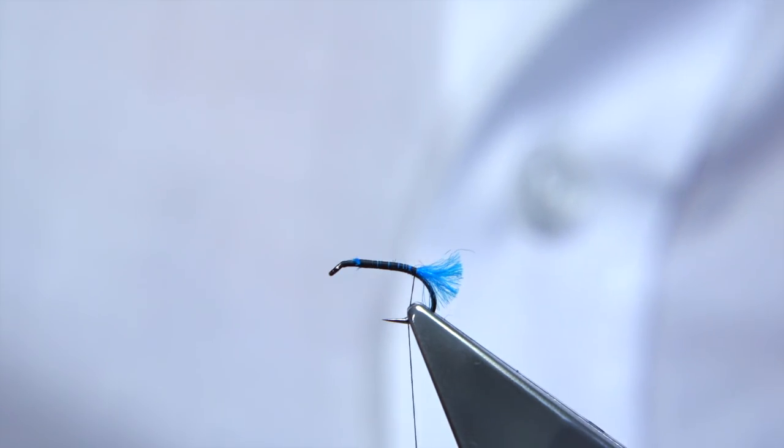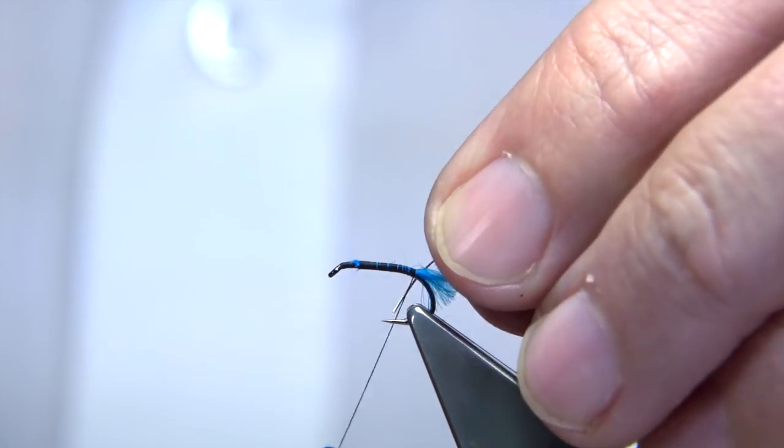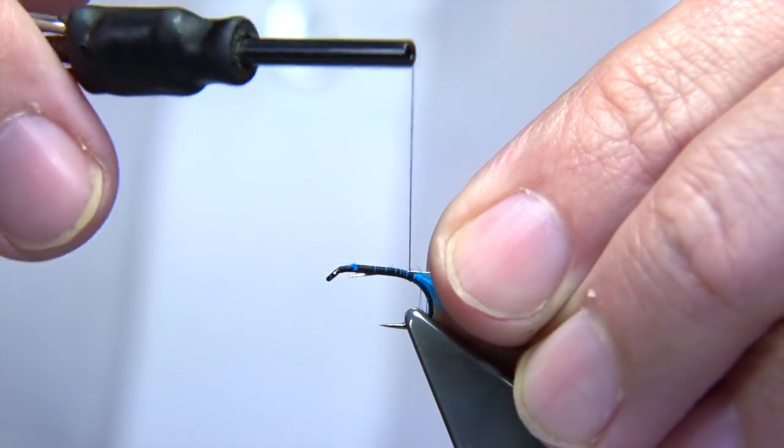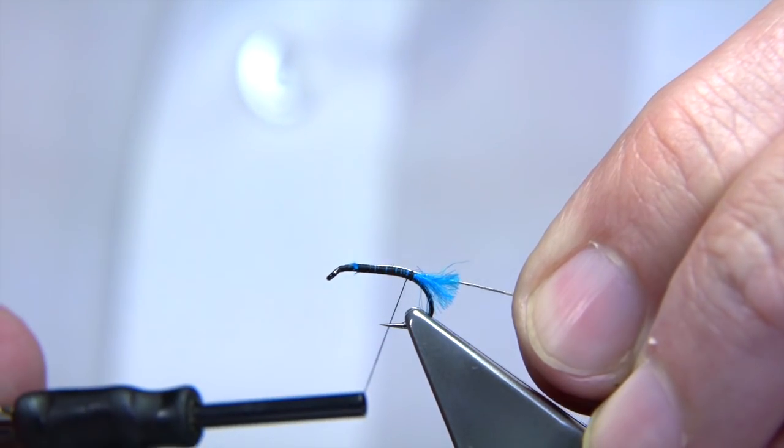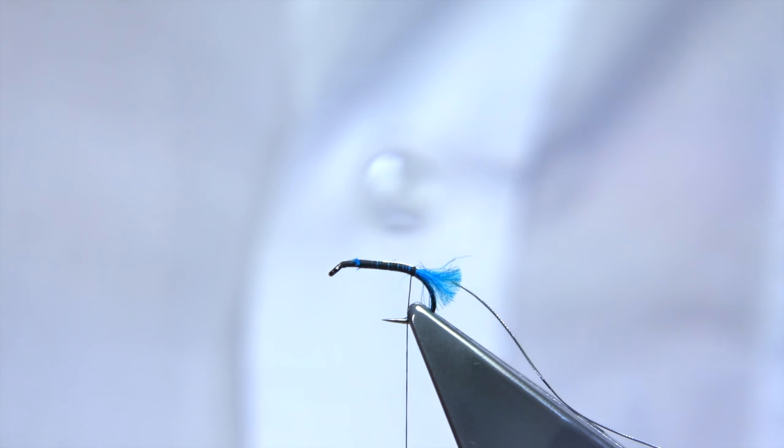For the rib, I'm using a fine oval silver tinsel, number 16 or small, or even if you want, just use a wire. Especially in this size, you can get away with a wire. I'm catching it in the full length of the body.